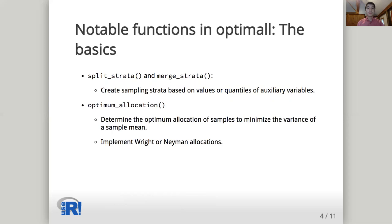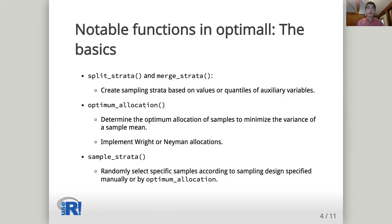Next, the optimum allocation function, which is the namesake of our package. Using Neyman allocation or Wright allocation, the latter being more exact when the solution is limited to integer values, this function allows users to determine the optimum allocation of samples to minimize the variance of a sample. The output of optimum allocation is a data frame specifying how many samples should be taken for each stratum, and this or any other manually specified allocation can be executed using the sample strata function to randomly select specific samples.